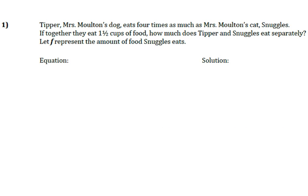Number 1. Tipper, Mrs. Moulton's dog, eats four times as much as Mrs. Moulton's cat, Snuggles. If together they eat one and one-half cups of food, how much does Tipper and Snuggles eat separately? Let F represent the amount of food Snuggles eats.